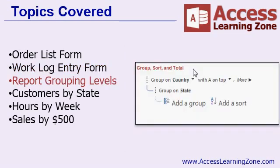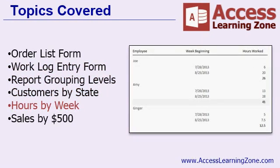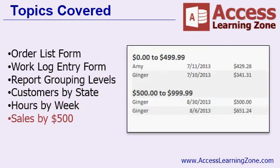We're going to spend a lot of time in today's class learning about report grouping and sorting levels. We'll start off simple with a report showing customers grouped by state. Then we'll create a report showing hours worked by week, grouped by the week of the year and showing hourly totals for each week for each employee. Then we'll make a sales report where all of our orders are broken down into $500 intervals: 0 to 500, 500 to 1000, and so on. And of course, in each of these lessons there are a million tips and tricks along the way.